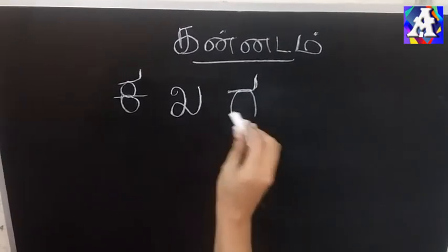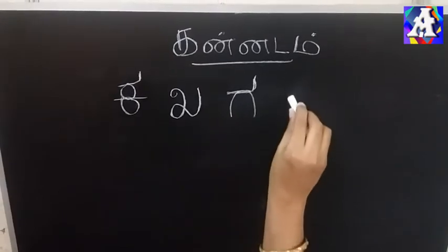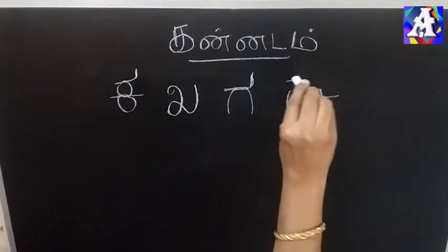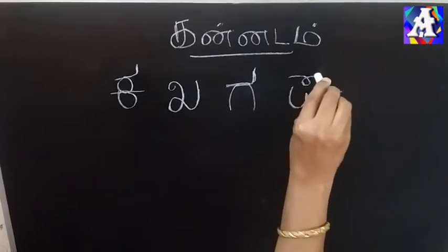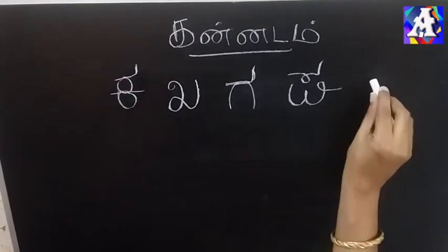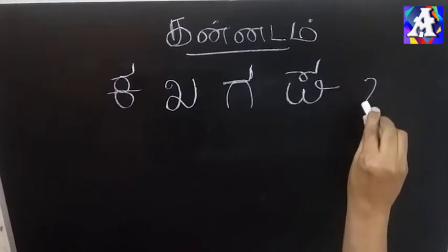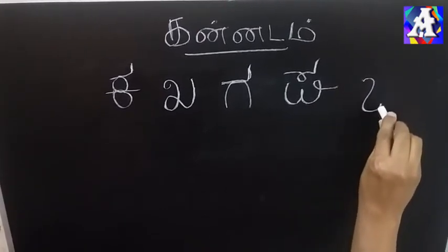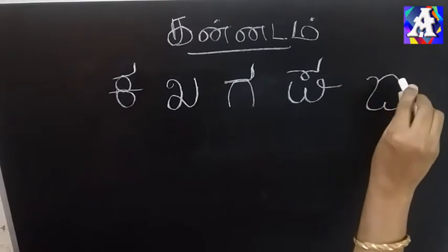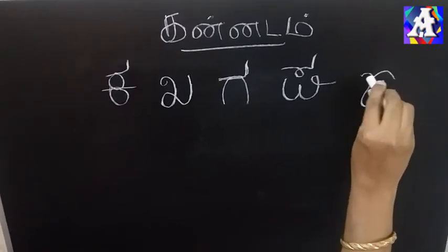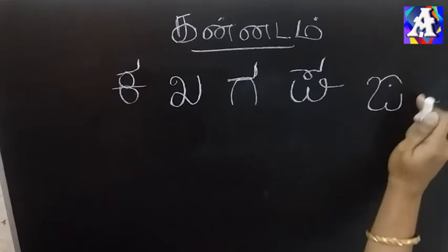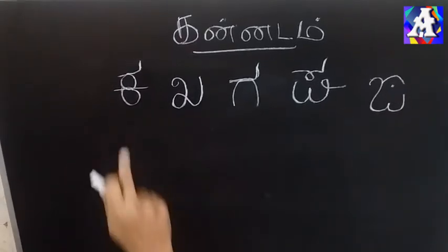K. G. We will use the same word for that. The second word is K, G. This word is N. The first word is N. The second word is N. This is N. So this is K.